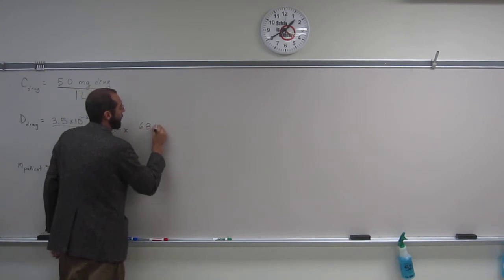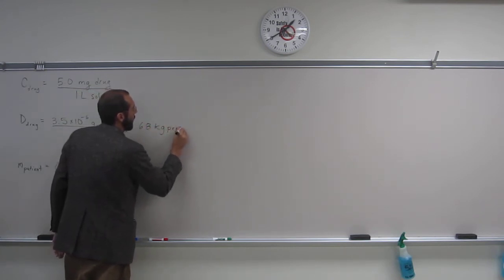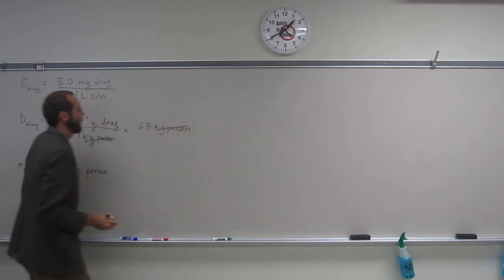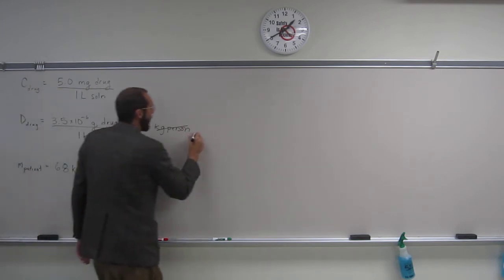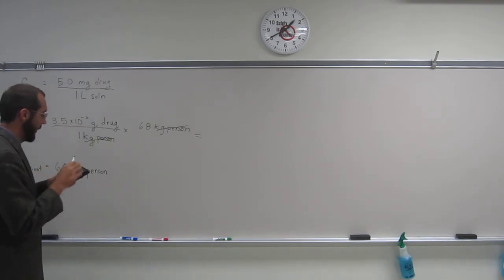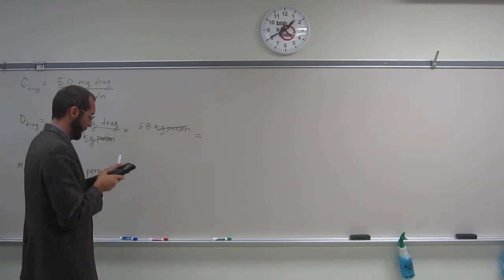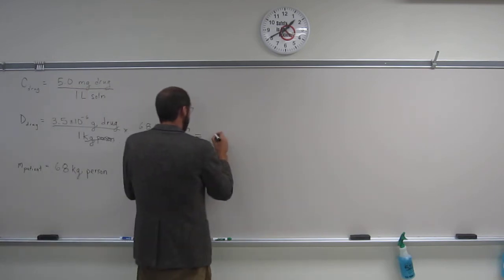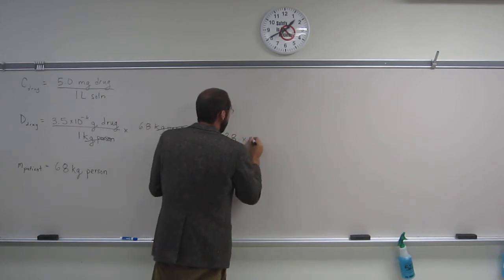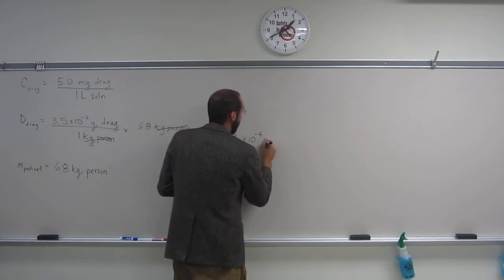So remember, this is on the top, this is on the bottom, so we can cancel out kilograms of a person. So when we do that, of course, take out your calculator, and we get 3.5 times 10 to the negative 6, and we'll multiply that by 68.